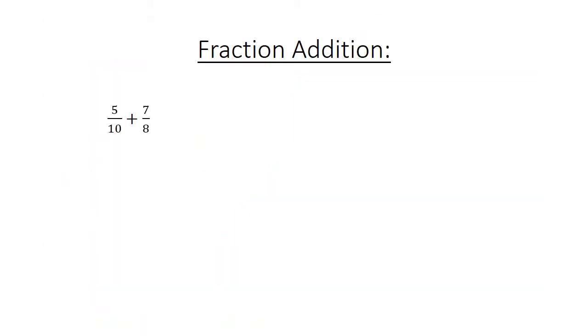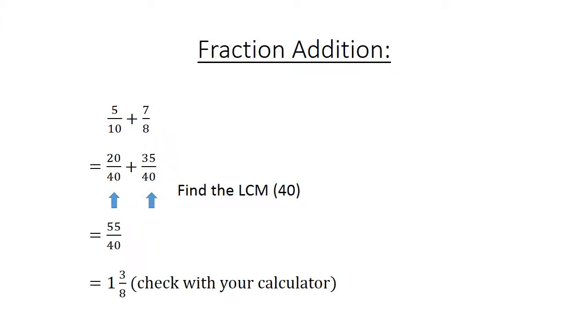Fraction addition: 5 over 10 plus 7 over 8. Find the lowest common multiple 40. 20 over 40 plus 35 over 40 equals 55 over 40 equals 1 and 3 over 8. Check with your calculator. Remember to use the fraction sign when you work with fractions.